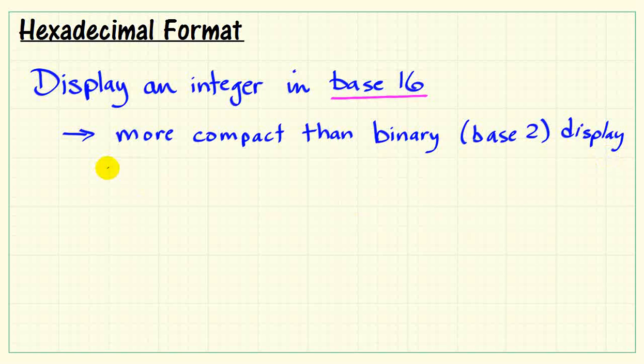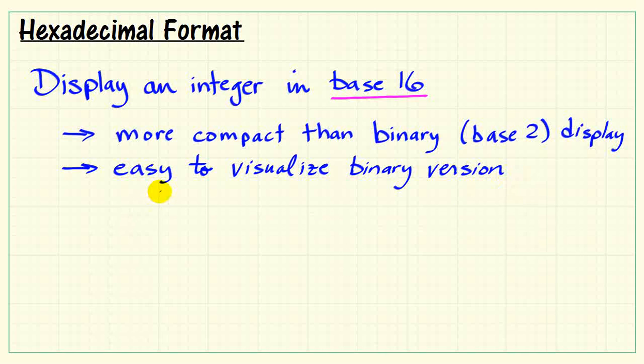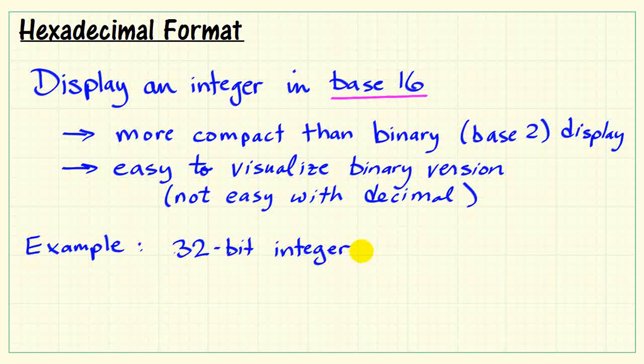You'll find that hexadecimal format is very common because it's more compact than a binary or base 2 display, and it's also easy to visualize the underlying binary version. And that's not easy to do in many cases with decimal format.